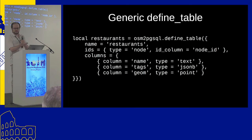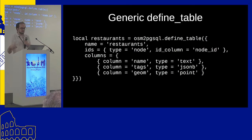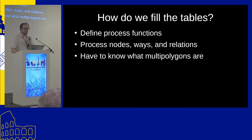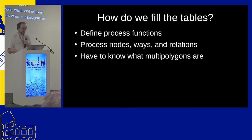Once you've defined the tables, you fill them by defining process functions that are called for each object in the input. You process nodes, ways, and relations separately. For each node that has tags in the input file, the process_node function is called, and if it's a restaurant, you call insert on the saved table object to insert a row as specified.